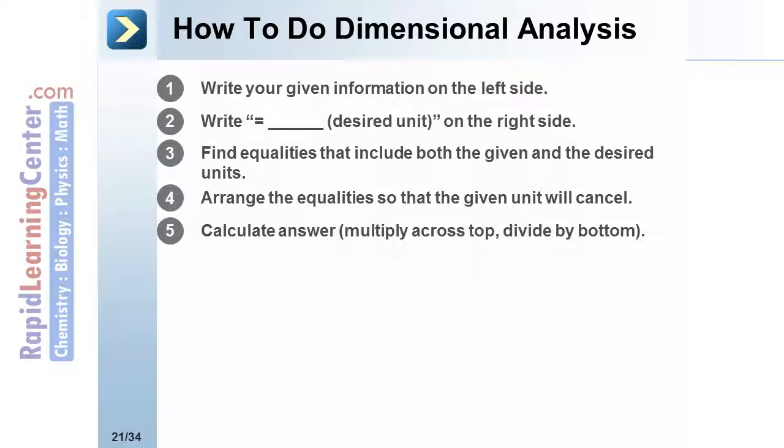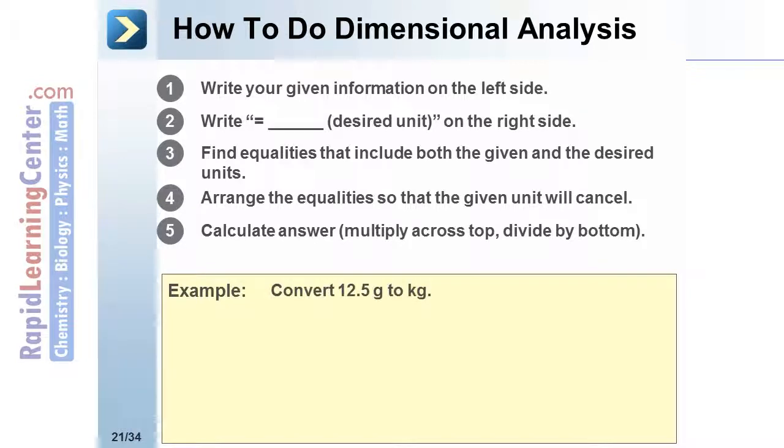For example, to convert 12.5 grams to kilograms, the given information is 12.5 grams. The desired unit is kilograms. The equality that contains both of these units is 1000 grams equals one kilogram. In order to cancel the gram unit, it needs to be placed on the bottom.